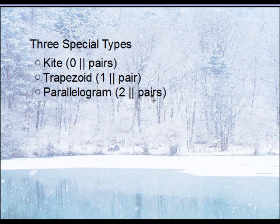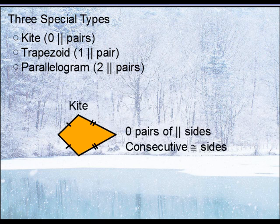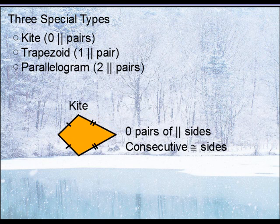Let's first discuss kites. The key characteristic for kites, other than not having any sides that are parallel, is that they have two pairs of congruent sides, and those two sides are going to be consecutive or adjacent to one another. You're not going to have a situation where opposite sides are congruent — that doesn't happen for a kite. Those sides have to be right next to each other; in fact, they would have to form an angle.